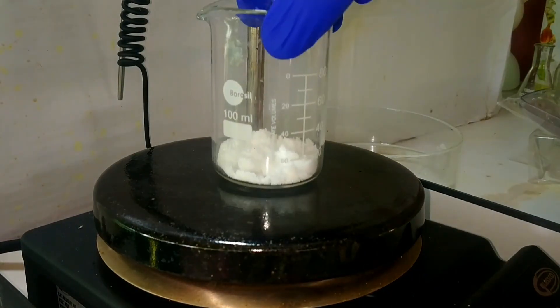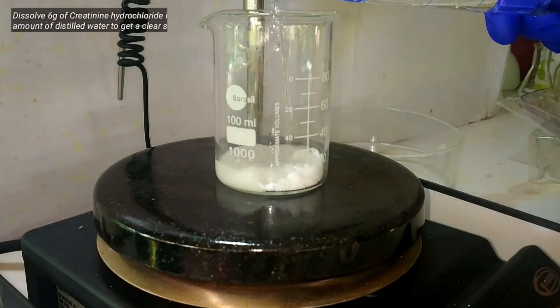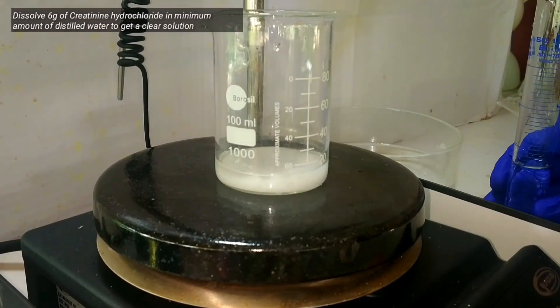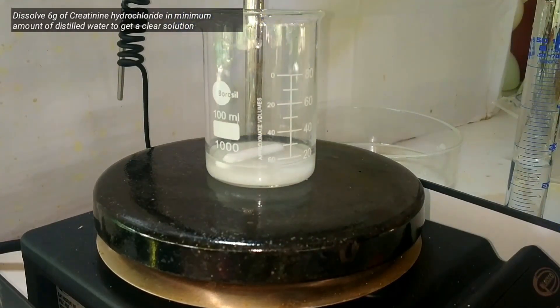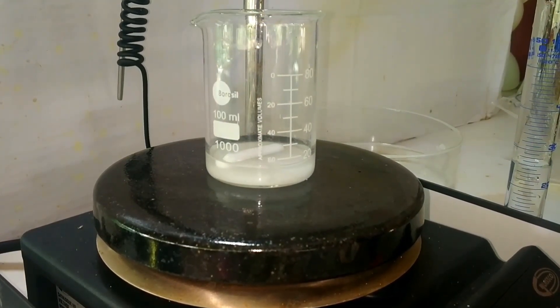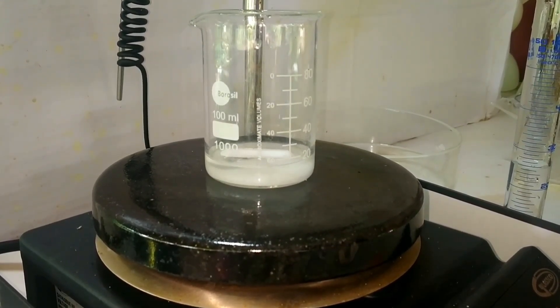Start by dissolving 6 grams of creatinine hydrochloride in minimum amount of distilled water. I have taken the compound in a 100 ml beaker and a stir bar was added into it. Then I added around 20 ml of distilled water into it.